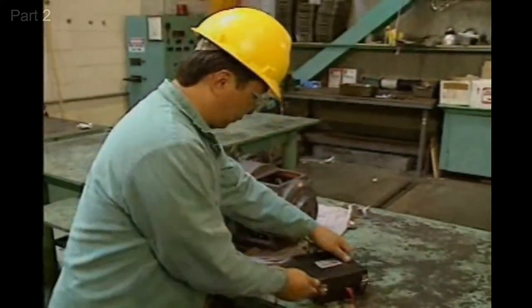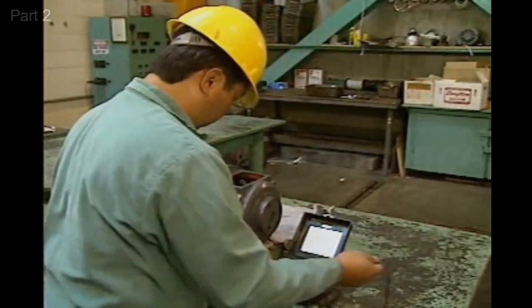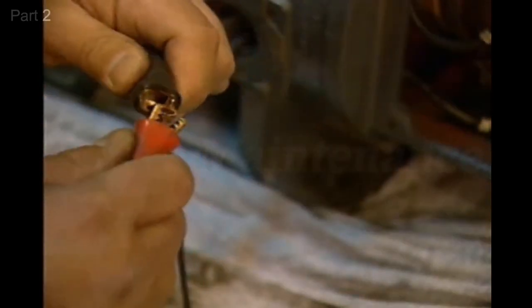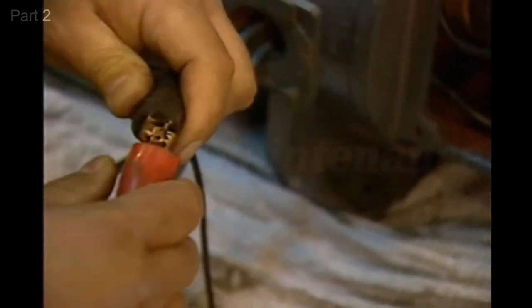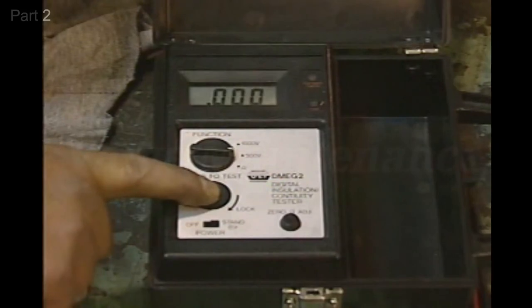Before a meg-ohm meter is used to test for grounds, it should be tested to make sure that it's operating properly. Begin by clipping the meter's two probes together and operating the meter. The meter should indicate zero resistance.